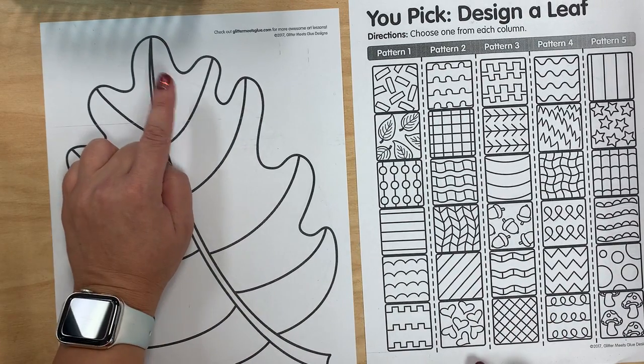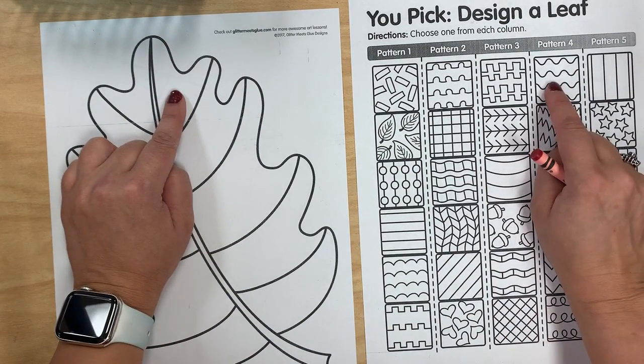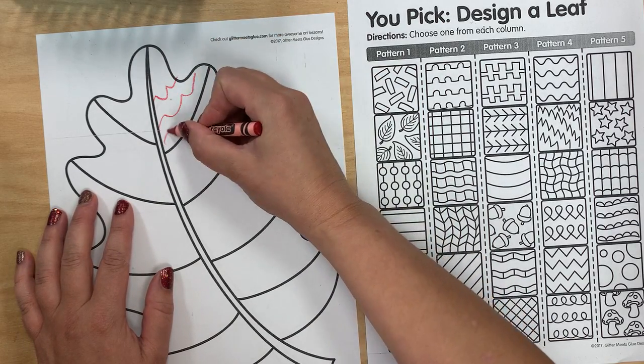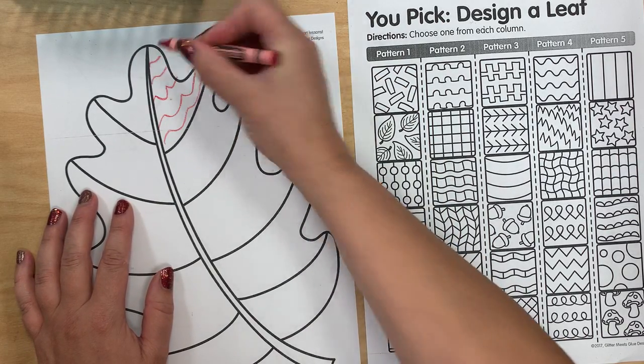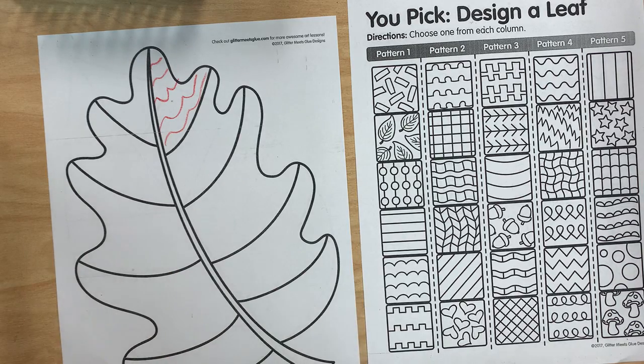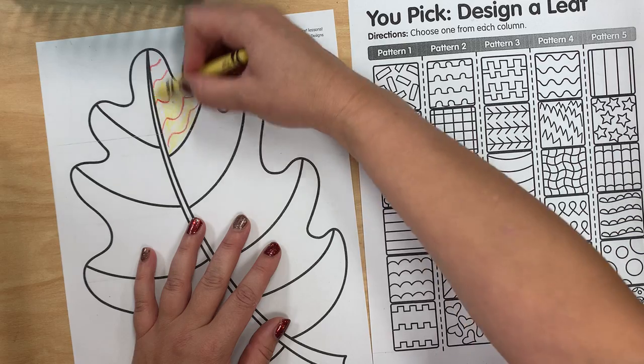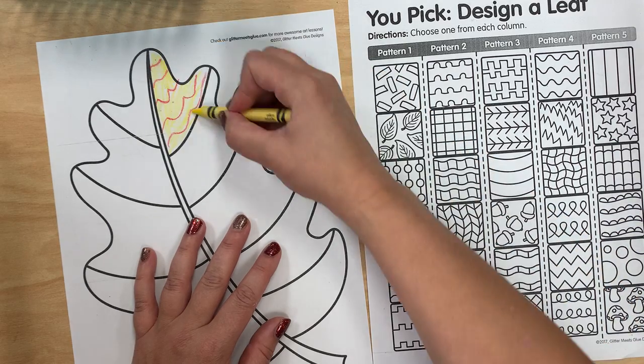So maybe for my first section I'm going to draw these wavy lines and I'm gonna pick a different color and I'm gonna color inside the section so it's nice and colorful.